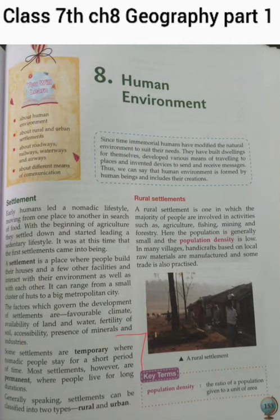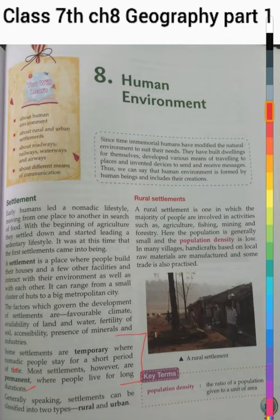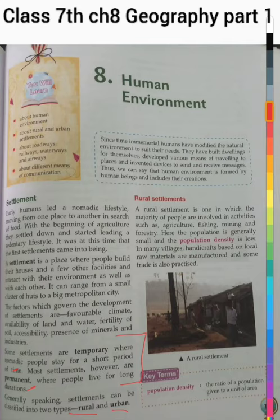Some settlements are temporary where nomadic people stay for a short period of time. Most settlements, however, are permanent where people live for a long duration. Generally speaking, settlements can be classified into two types: rural and urban.